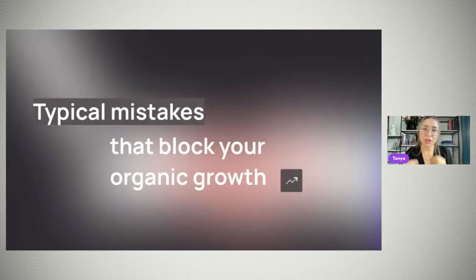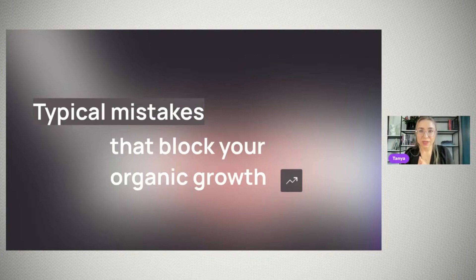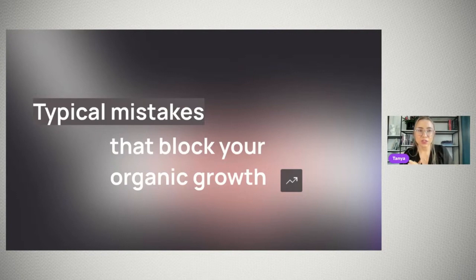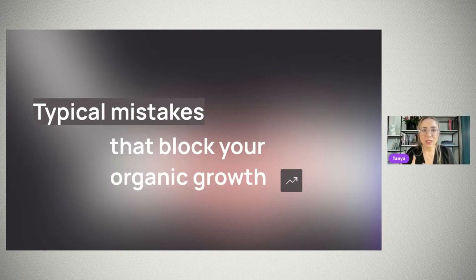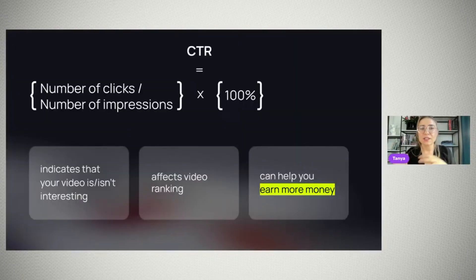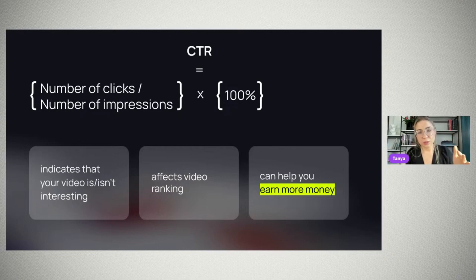Some typical mistakes block your organic growth. The first thing we'll discuss is CTR — click-through rate. This is the percentage of users who clicked on your video compared to the number of times it was shown. CTR is calculated as the number of clicks divided by the number of impressions, multiplied by 100.